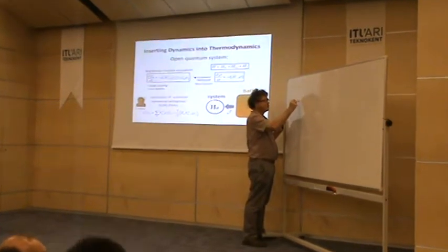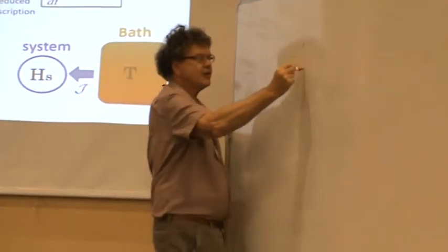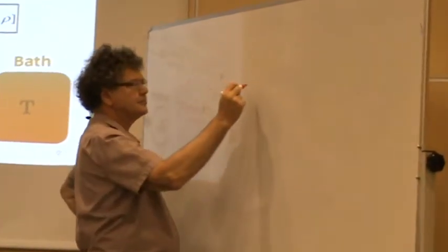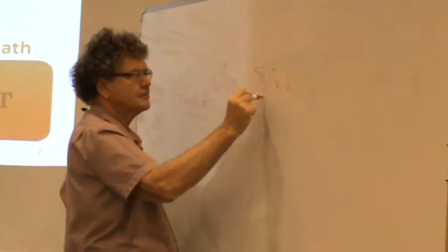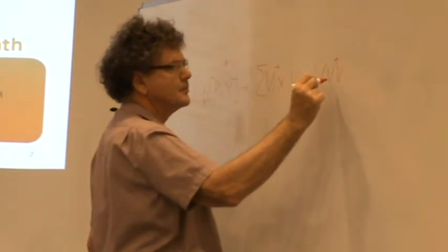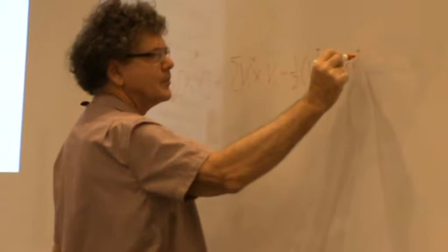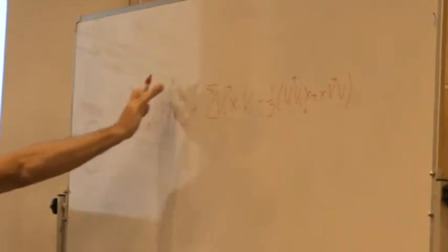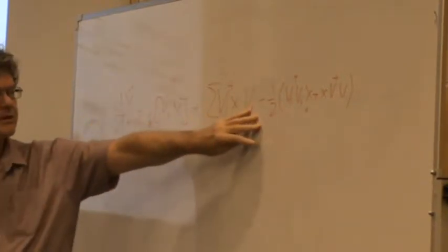If we have an operator X, the change in time of the operator X is given by the Hamiltonian term HX plus the dissipative terms VX. This structure is due to Lindblad. We say this is generating the unitary part of the dynamics and this is generating the dissipated part of the dynamics.